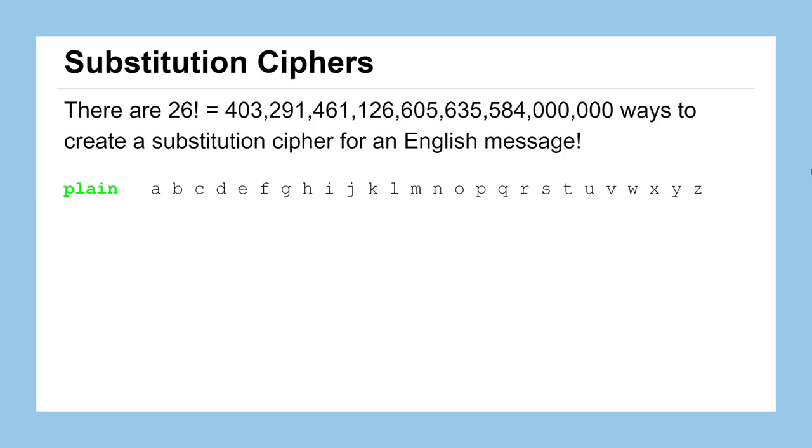As we discussed in a previous lesson, there's many ways to create substitution ciphers. If we focus on our plaintext alphabet on the screen, we would have 26 choices to map the letter A to some letter in the ciphertext alphabet, and then 25 choices remain for the letter B. Because those are independent choices, we can multiply the number of possibilities for each together.